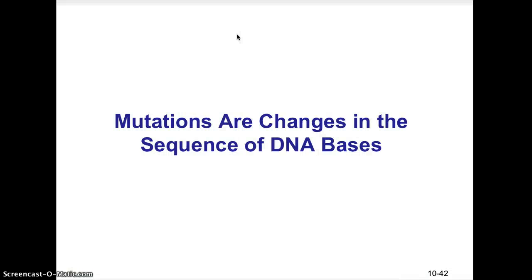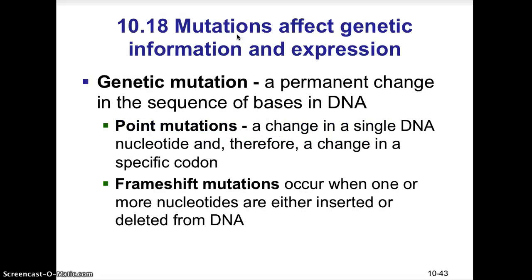A look at mutations — how do mutations alter this entire process? Mutations in general are changes in the sequence of DNA nucleotide bases. A genetic mutation is a permanent change in the sequence of bases in DNA. Two basic types of mutations are point mutations and frameshift mutations. A point mutation is a change in a single DNA nucleotide and, therefore, a change in a specific codon. A frameshift mutation can be very detrimental to protein building because it occurs when one or more nucleotides are either inserted — an addition — or deleted — a removal — from the DNA.